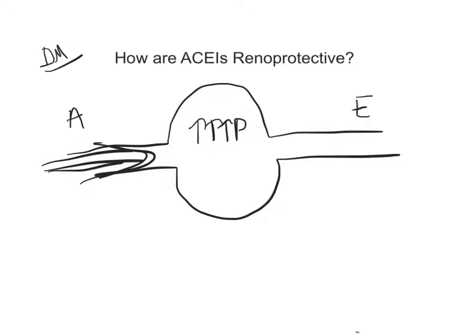What this pressure does is alter the basement membrane of the glomerulus, causing proteinuria. We all know that there should be no protein in your urine at all.